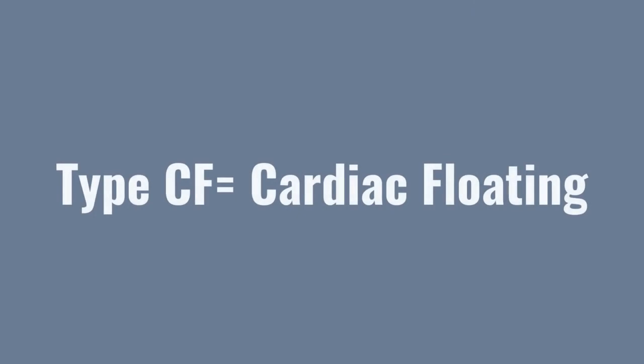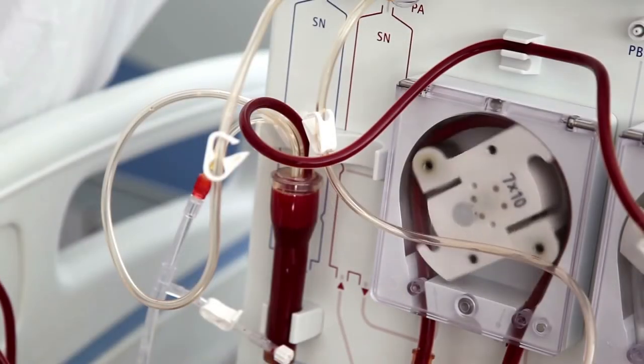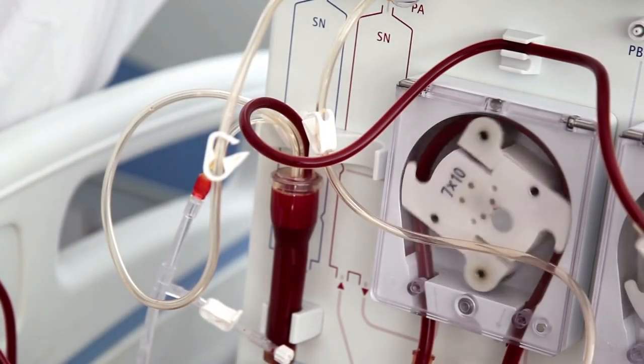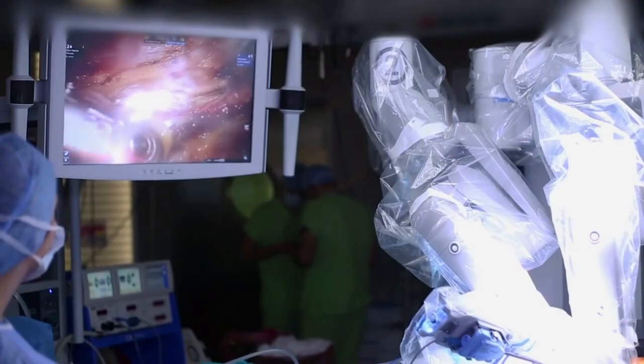Type CF: Cardiac floating requirements are the strictest of the applied part classifications, allowing only up to 10 microamps of patient leakage. Any part that comes into contact with the heart or bloodstream is classified as CF. Examples of type CF include dialysis, LVAD or artificial heart, and surgical equipment. Since the risk of physical harm is greatest when applied parts contact the heart or bloodstream, the limits are considerably lower for type CF.